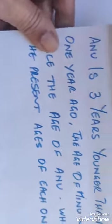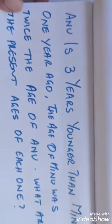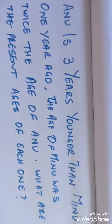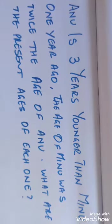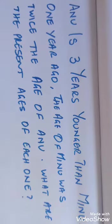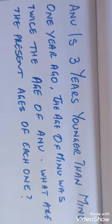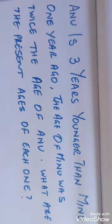Let's assume we have a question like this: Anu is three years younger than Minu. One year ago, the age of Minu was twice the age of Anu. What are the present ages of each one?